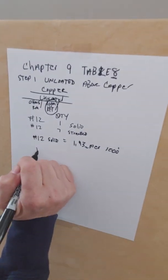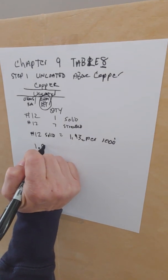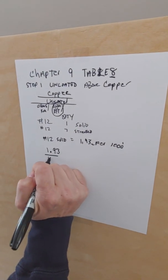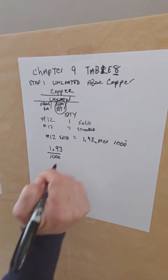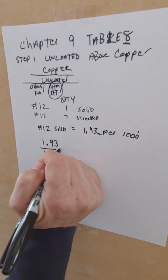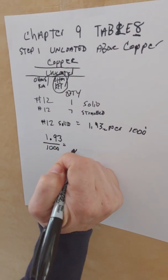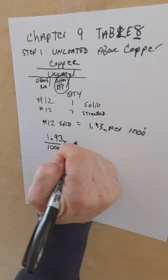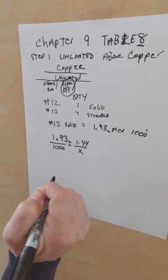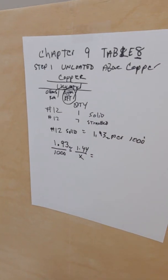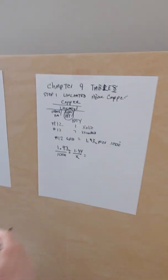How we're going to set it up: we know that 1.93 is equal to a thousand feet, and we know that we want to know how many feet, and this is 1.44 ohms.